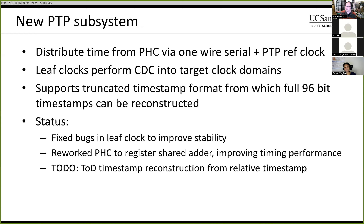So, new PTP subsystem. The idea is to distribute the PTP hardware clock time via a single-wire serial connection to other components inside the FPGA. This allows you to send the time across multiple SLRs into multiple clock domains, wherever you need it. The idea is also to support using truncated relative timestamps from which the 96-bit timestamps can be reconstructed. We have the new hardware clock, and leaf clocks which generate both the 96-bit absolute timestamp and the 64-bit relative timestamp — basically a drop-in replacement for the old hardware clock components.